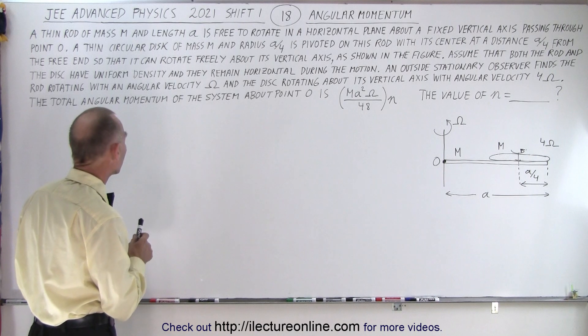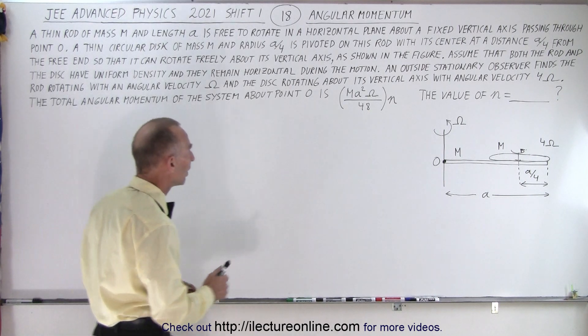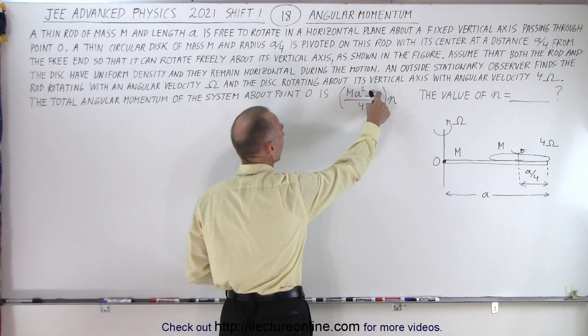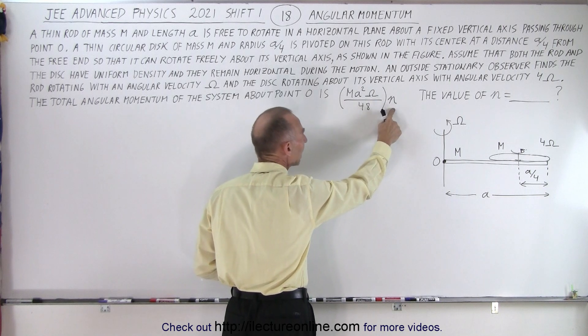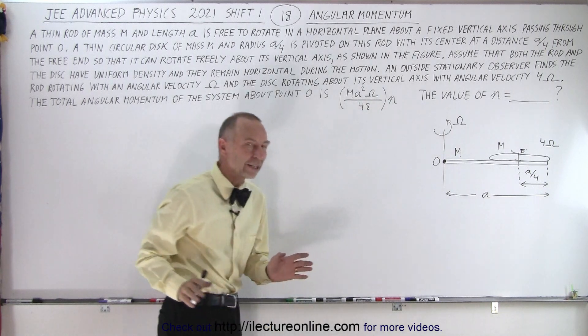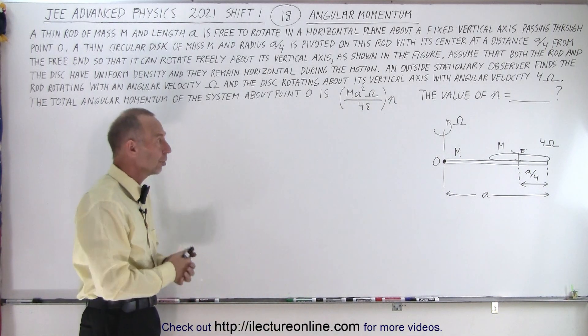The total angular momentum of the system about O is m a squared omega over 48 times n and they want us to find the value of n, presumably an integer.